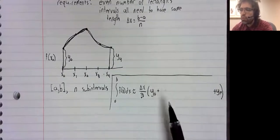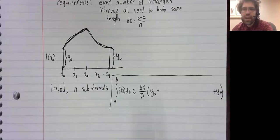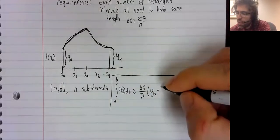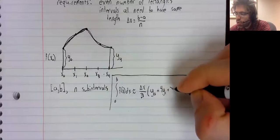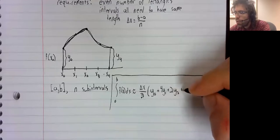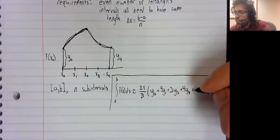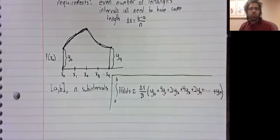In the trapezoidal rule, all the terms in between the first and the last had a two in front of them. Here it alternates between four and two. And that's Simpson's Rule.